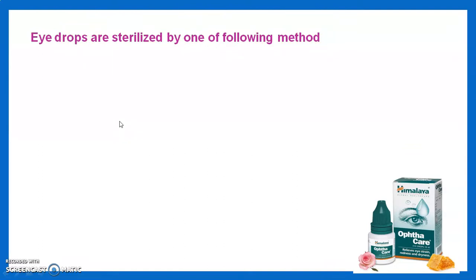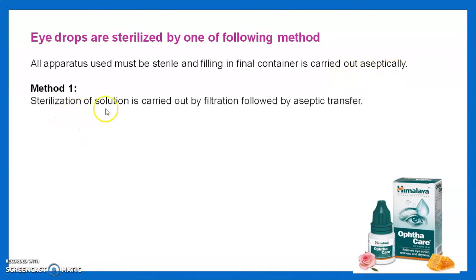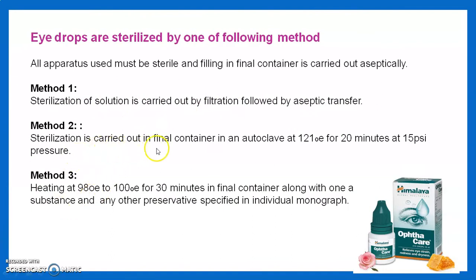Eye ointment should be filled in a collapsible tube for easy installation. Eye drops are sterilized using sterile apparatus and aseptic filling into the final container. Three sterilization methods: Method 1 - filtration using aseptic transfer; Method 2 - sterilization in the final container at 121°C for 20 minutes at 15 lbs pressure; Method 3 - 98 to 100°C for 30 minutes in the final container with a preservative specified in the individual monograph. Eye ointment is sterilized in a hot air oven.